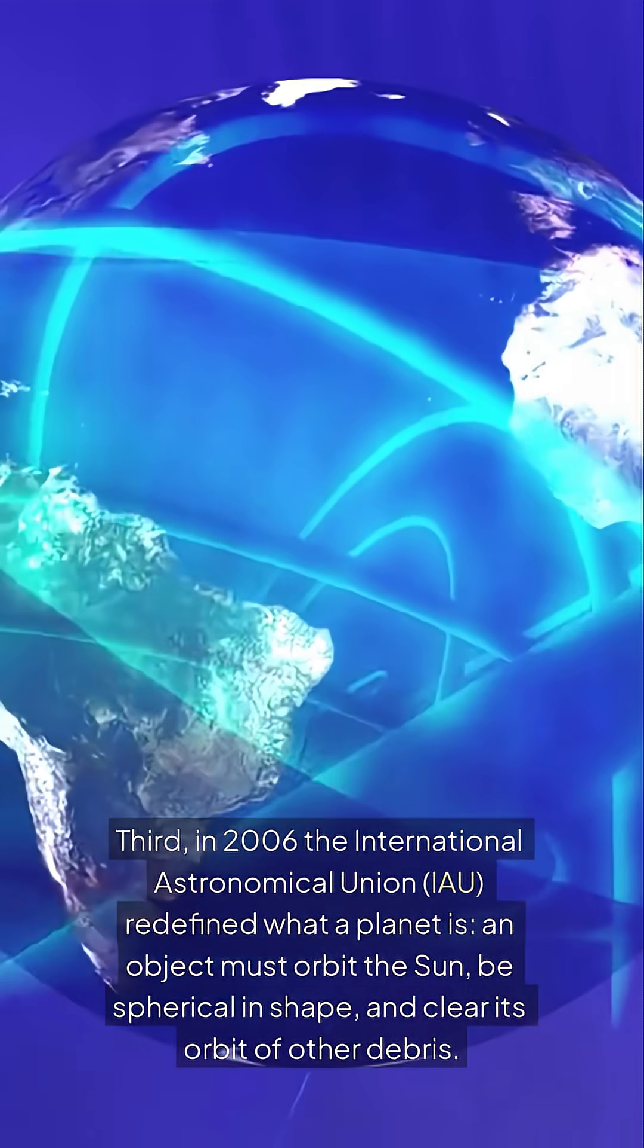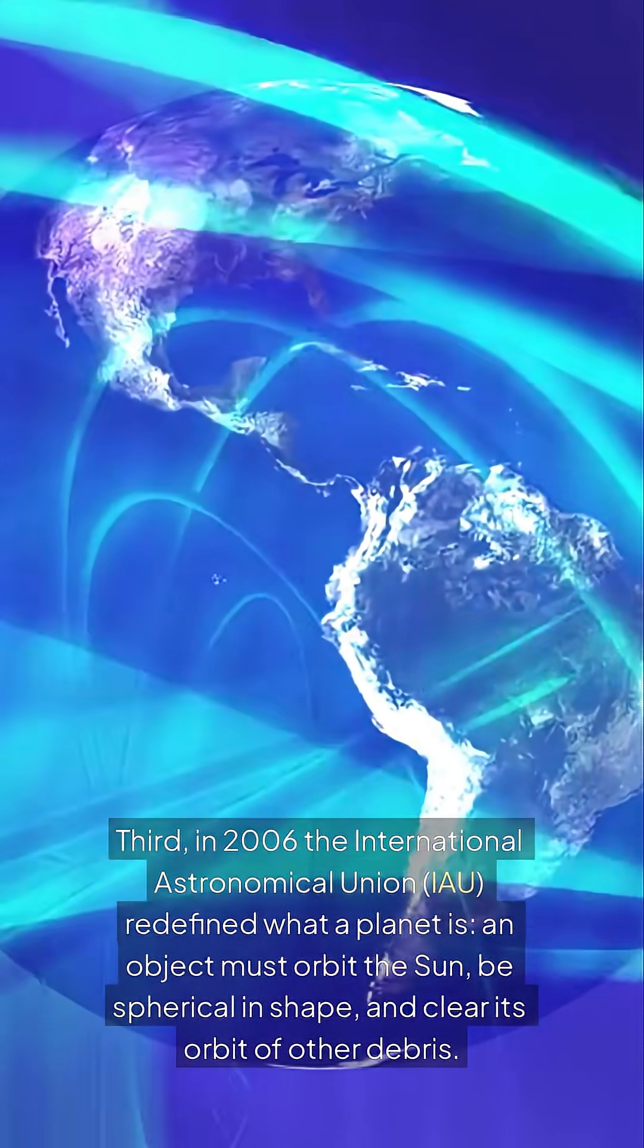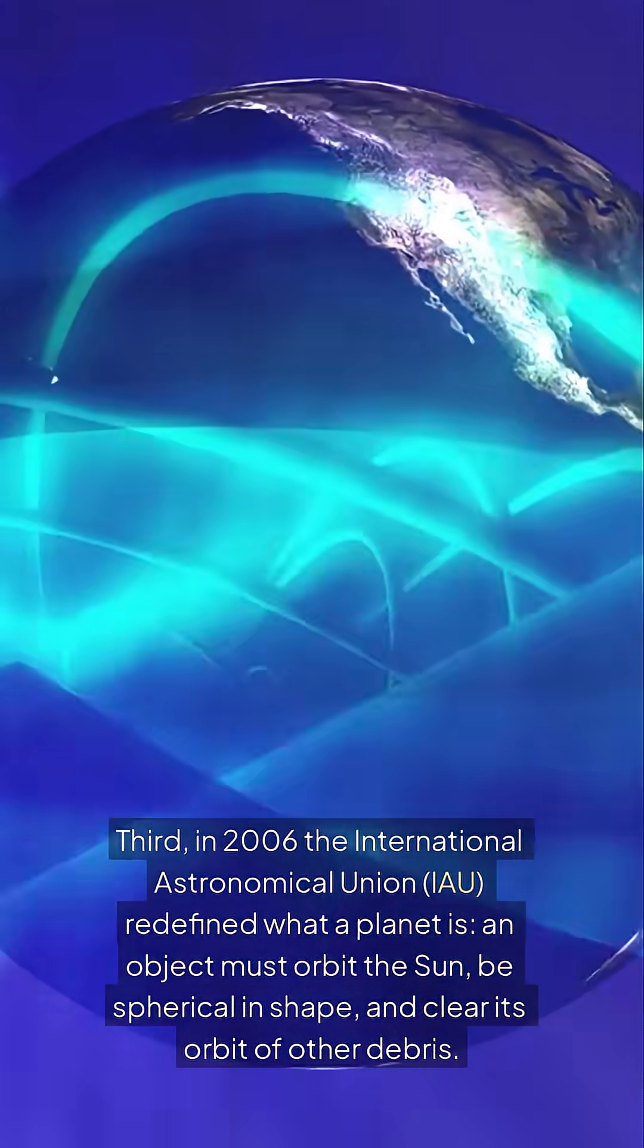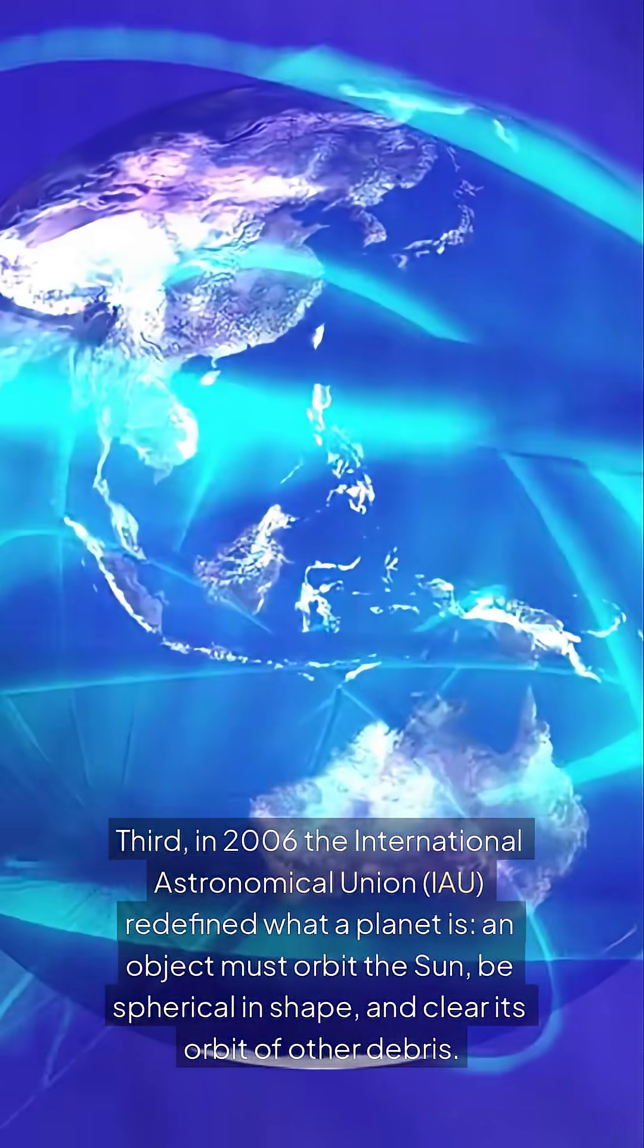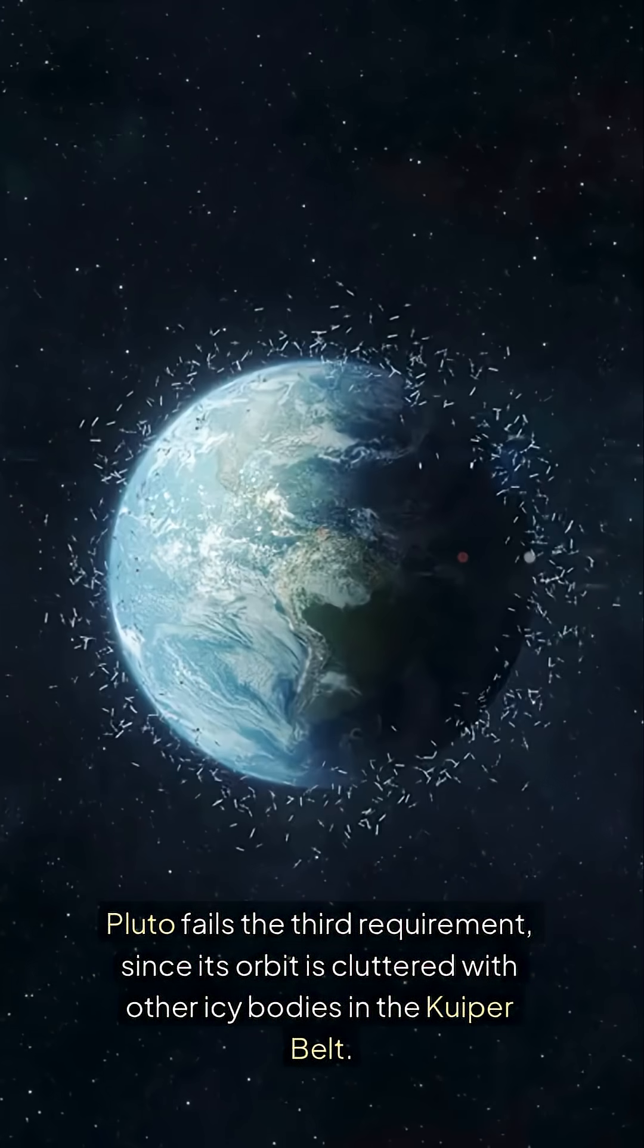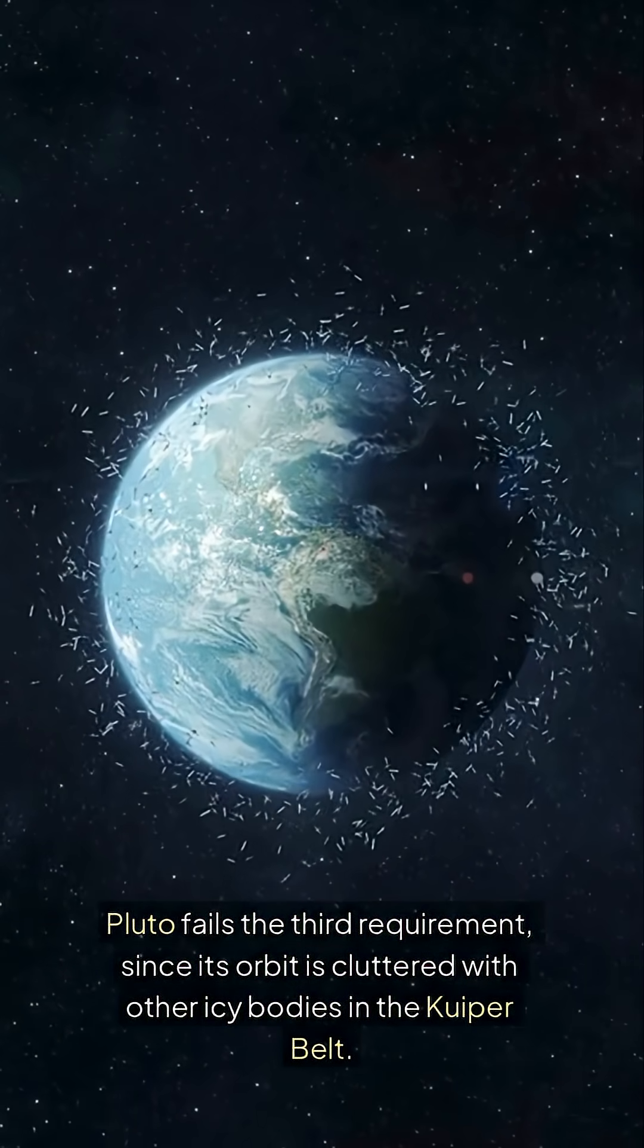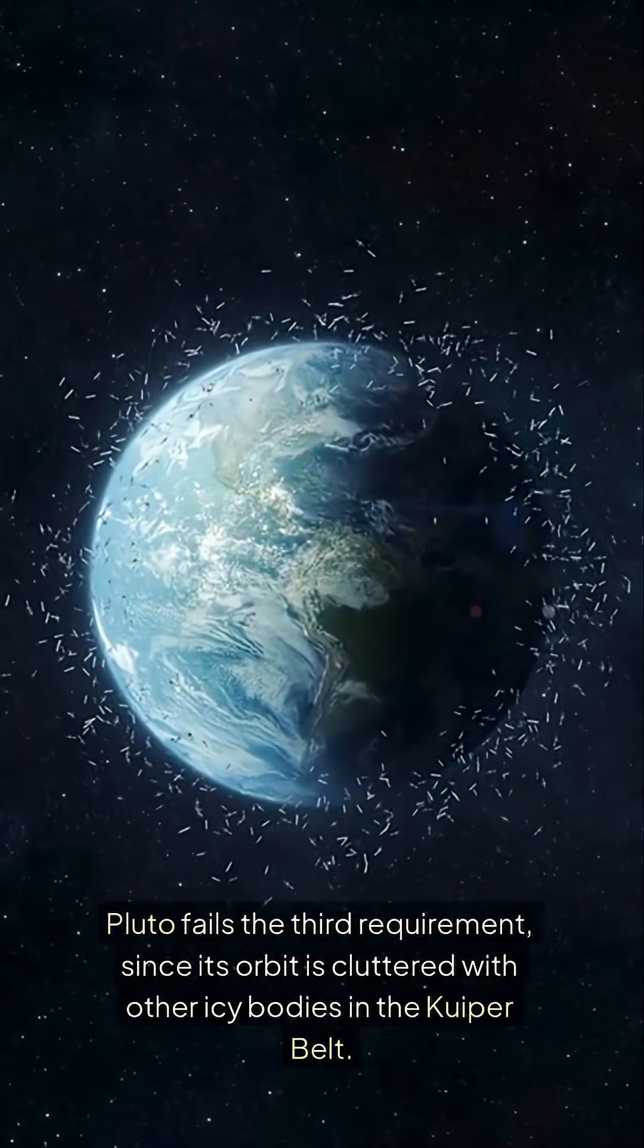Third, in 2006, the International Astronomical Union (IAU) redefined what a planet is. An object must orbit the Sun, be spherical in shape, and clear its orbit of other debris. Pluto fails the third requirement since its orbit is cluttered with other icy bodies in the Kuiper belt.